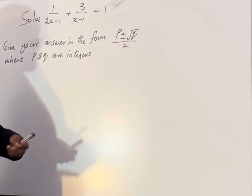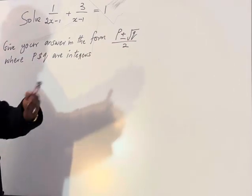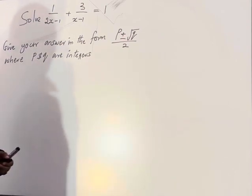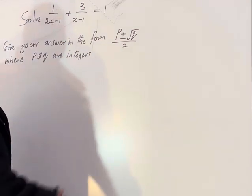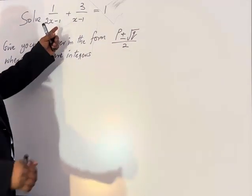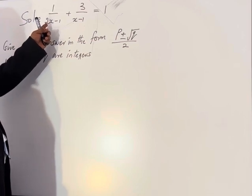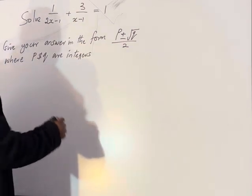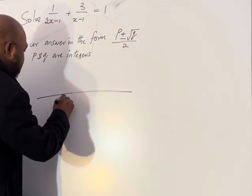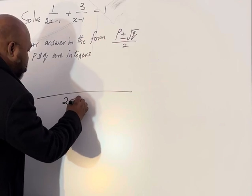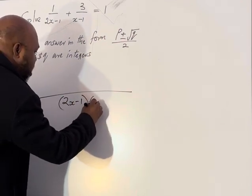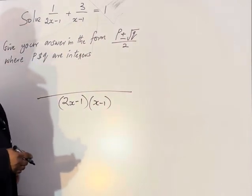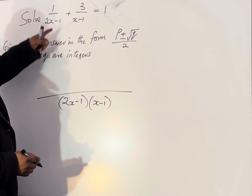It's a direct question, so we don't need to expand. The first thing we need to look for is the LCM between 2x-1 and x-1. We know that the LCM will be (2x-1)(x-1).